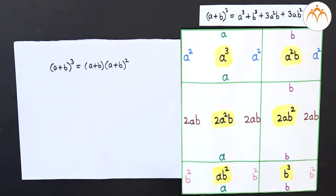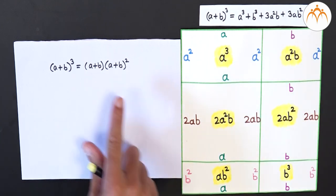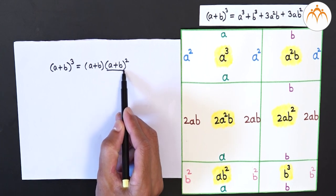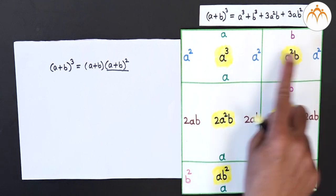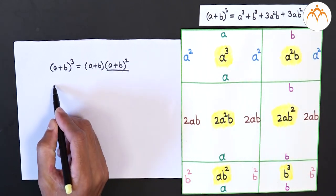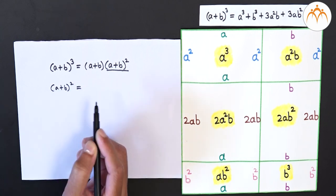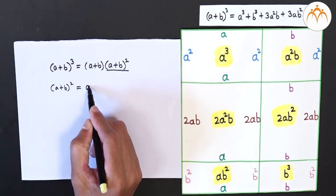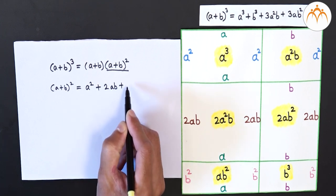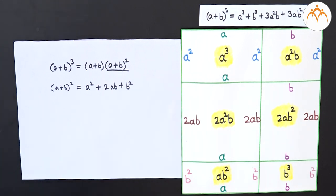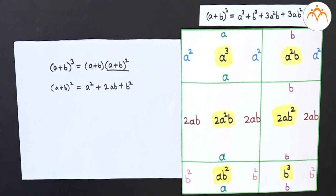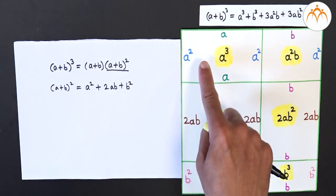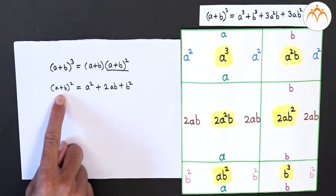Take a rectangle whose one side is of length a+b, and the other side has length (a+b)². To achieve (a+b)² as a side length, we use the known formula: (a+b)² = a² + 2ab + b². Using this formula, the other side has length a² + 2ab + b², which is nothing but (a+b)². Hence the area of the complete rectangle is (a+b) × (a+b)², which equals (a+b)³.